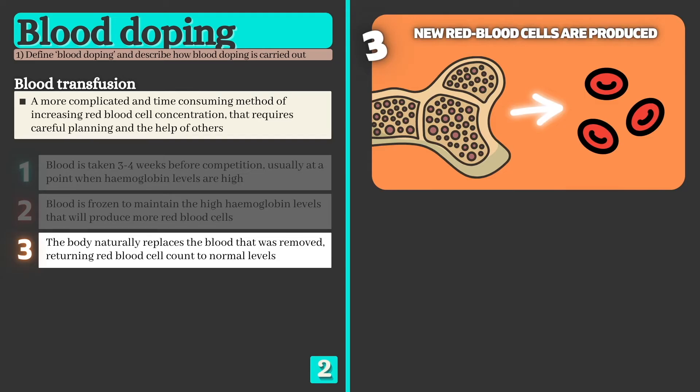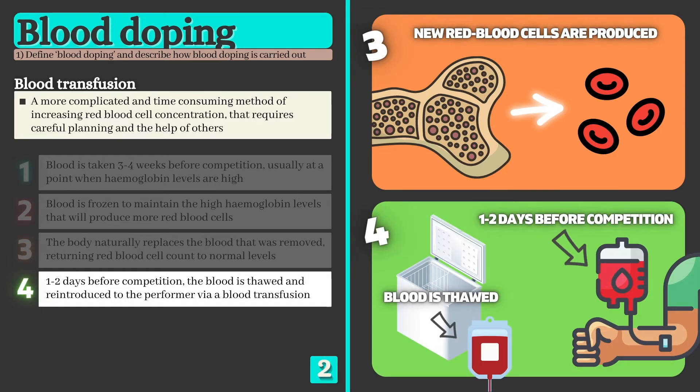Step 3: The body naturally begins to replace the extracted blood, returning the performer's red blood cell count to normal levels. Step 4: One or two days before competition, the frozen blood is thawed and reintroduced to the performer via a blood transfusion.